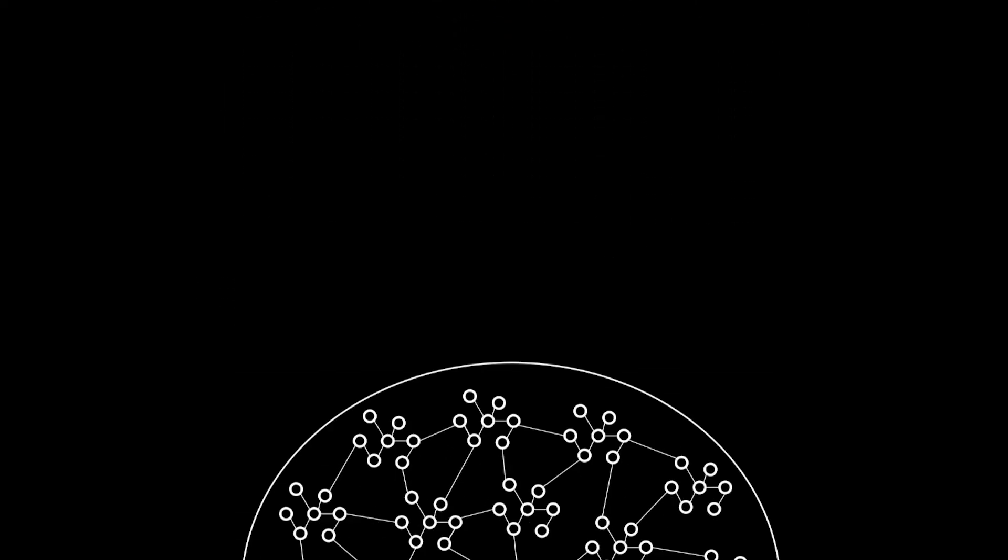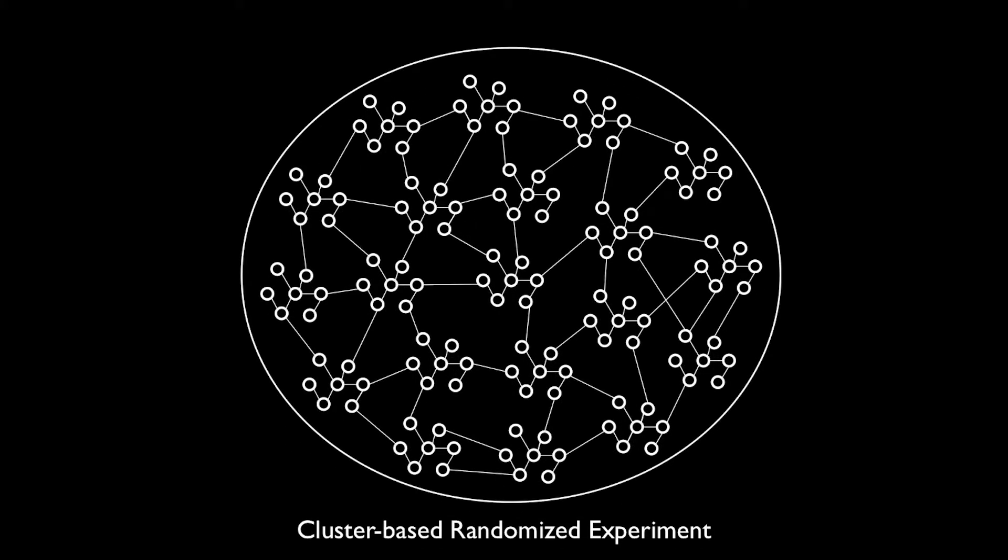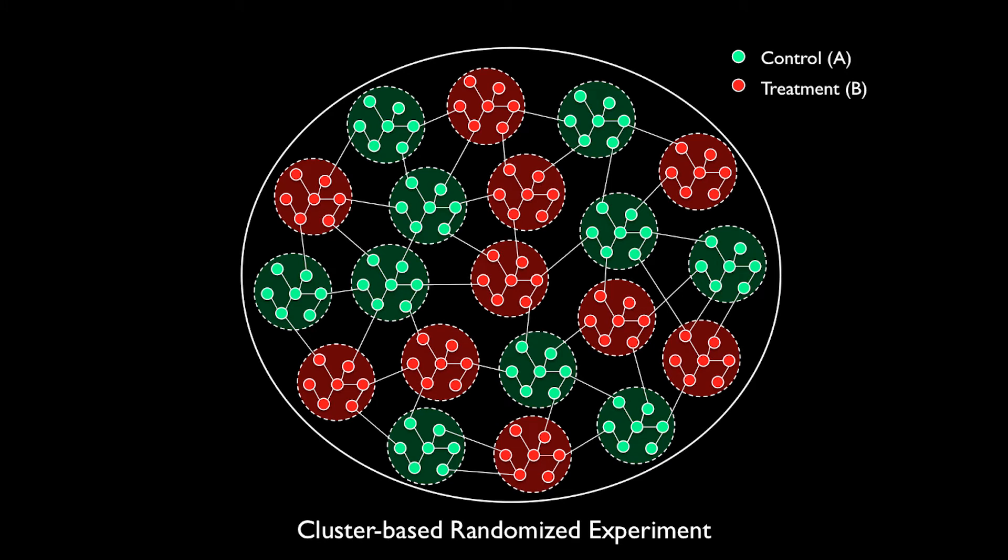One way to partially mitigate this limitation is by running cluster-based randomized experiments, where we find clusters of densely connected users, and we randomly assign each cluster to treatment or control. Now, since users that are connected are more often in the same treatment condition, it is less likely that the treatment effects will spill from the treatment to the control group.